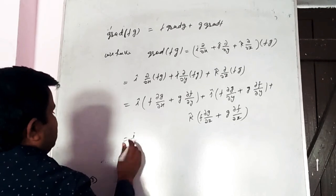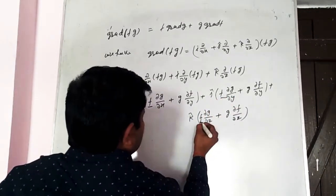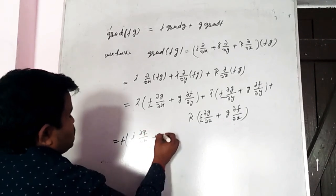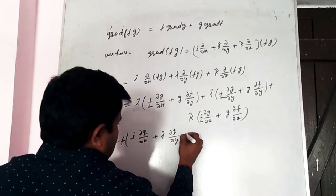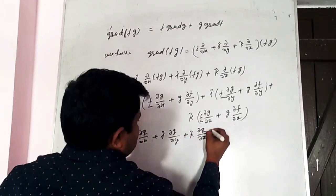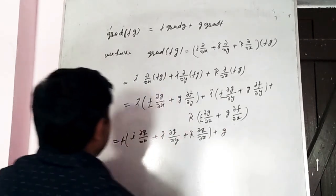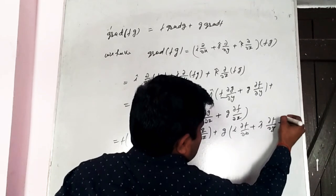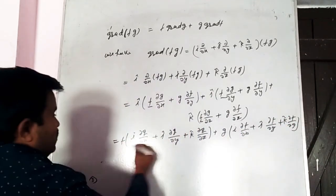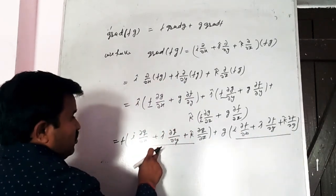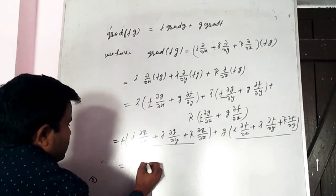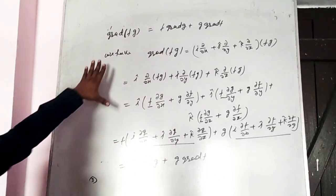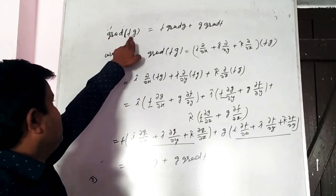Separating common factors: f(i ∂g/∂x + j ∂g/∂y + k ∂g/∂z) + g(i ∂f/∂x + j ∂f/∂y + k ∂f/∂z). This gives f·grad g + g·grad f. So grad(fg) = f·grad g + g·grad f.